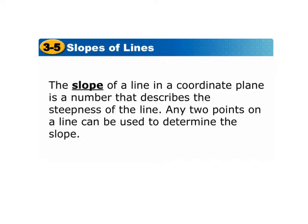Any two points on a line can be used to determine the slope. So the steepness is our slope. So when you think about skiing and you're hitting the slopes — this is you skiing.